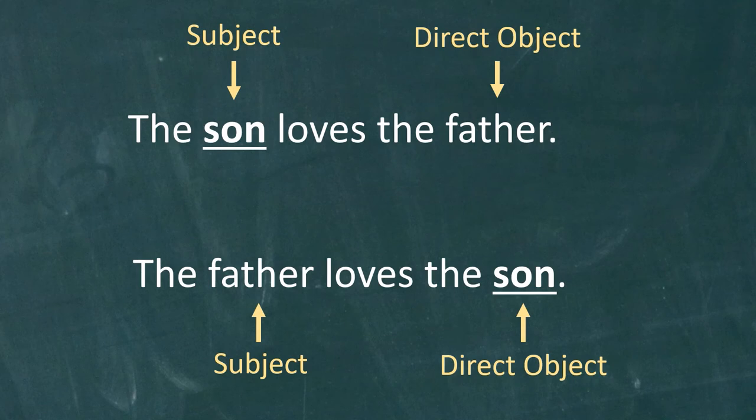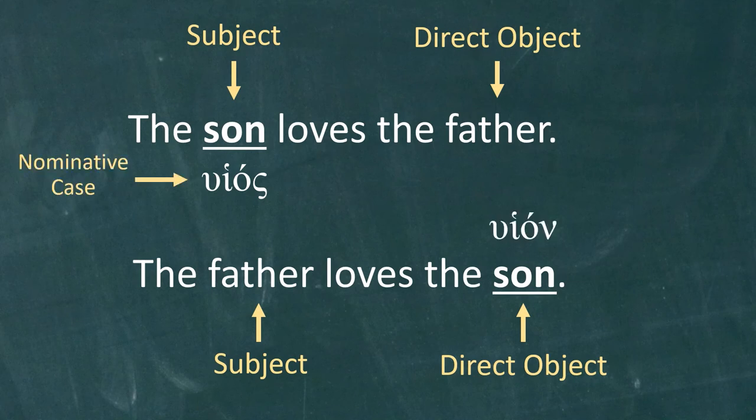If we were to translate the first sentence into Greek, the word son would be spelled huios. However, if we were to translate the second sentence into Greek, the word son would be spelled huion. Huios is the form of the word in the nominative case, and huion is the form of the word in the accusative case.